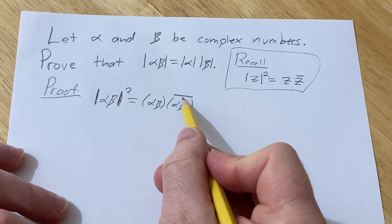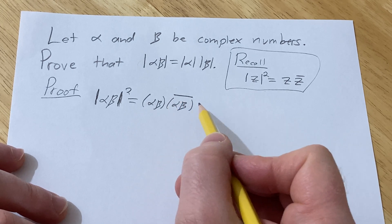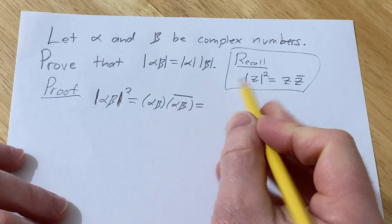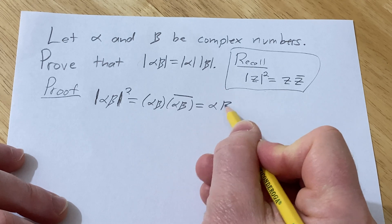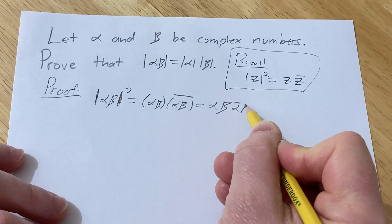Now the conjugate distributes over the product. That's a property of complex numbers. So you can write this as alpha beta, alpha conjugate beta conjugate.